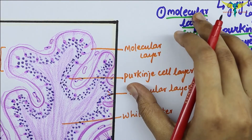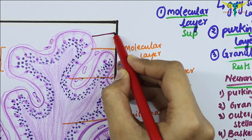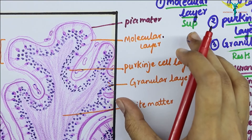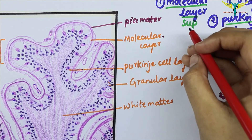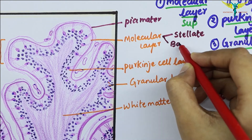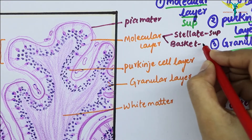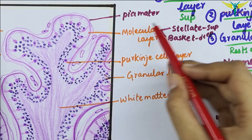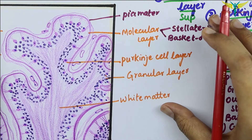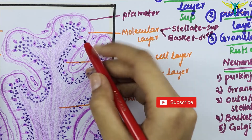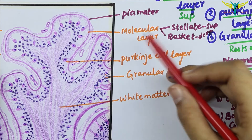The molecular layer is the most superficial layer, situated just below the pia mater. It contains more myelinated and unmyelinated fibers and two types of cells: the stellate cells, situated in the superficial part of the molecular layer, and the basket cells, situated in the deeper part. The stellate cells lie in the outer superficial layer and their processes are confined to the molecular layer, where they synapse with the parallel fibers, and their axons synapse with the dendrites of the Purkinje cells below.